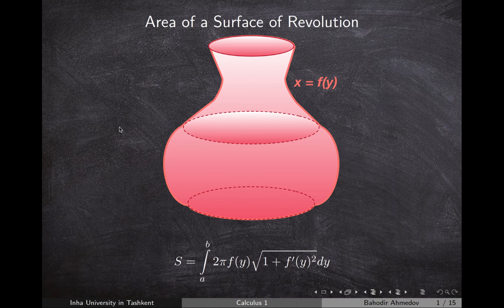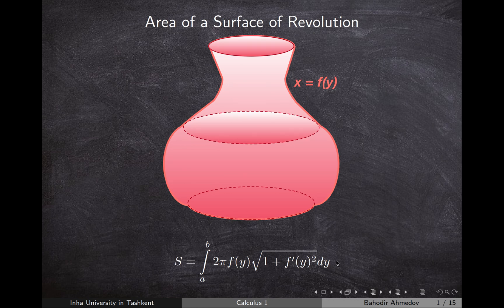In this video we're going to discuss how to find the surface area of objects obtained by rotating some curves around the y or x axis. Previously we were interested in finding the volume of such objects — basically how much water we can fill inside. Today we're going to discuss how to find the surface area, essentially how much metal or plastic would be needed to build this kind of object. We'll discuss how to find this formula and how to apply it in examples.